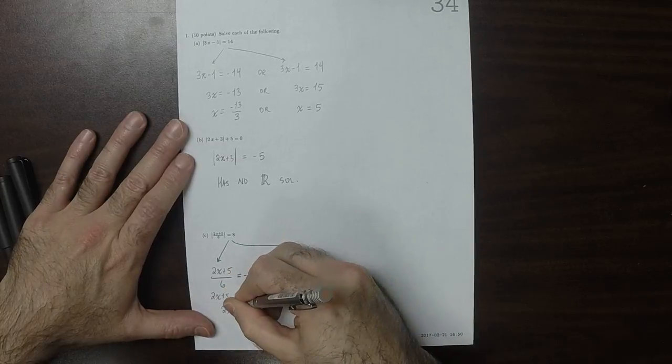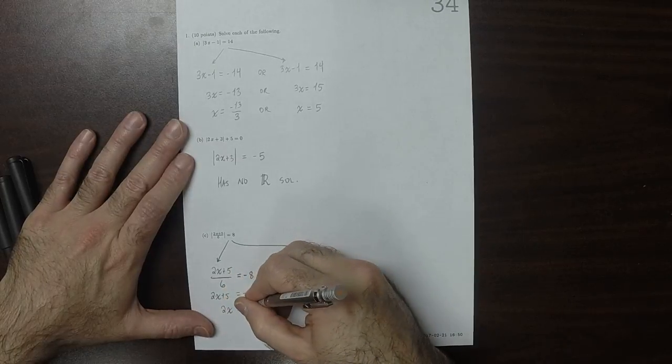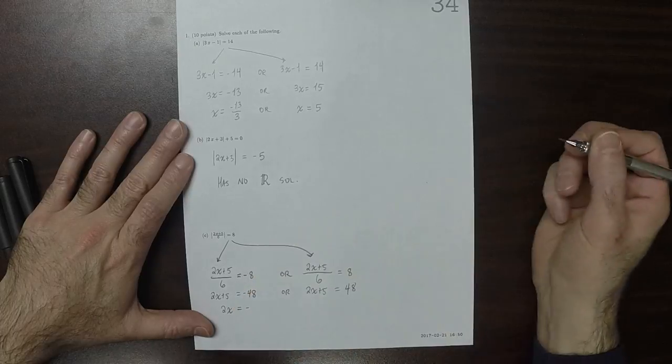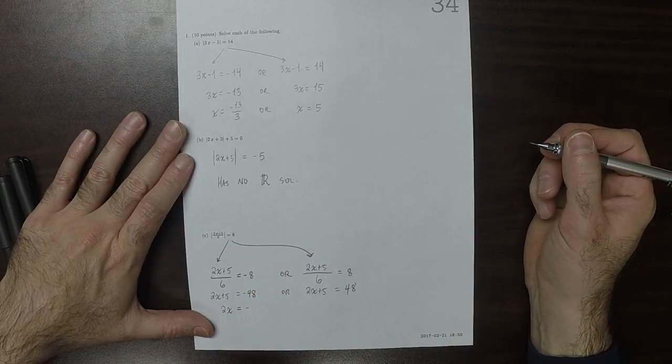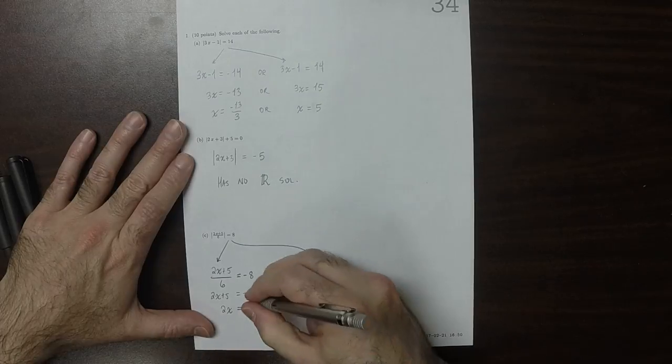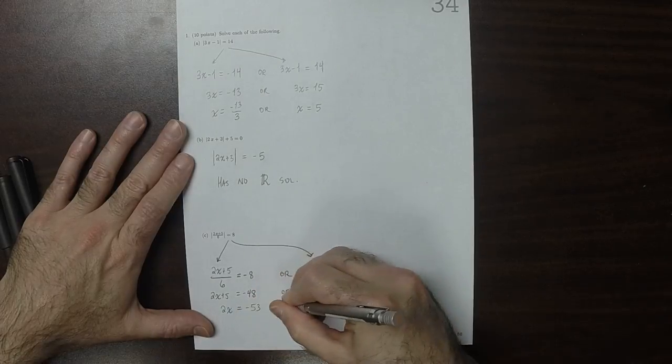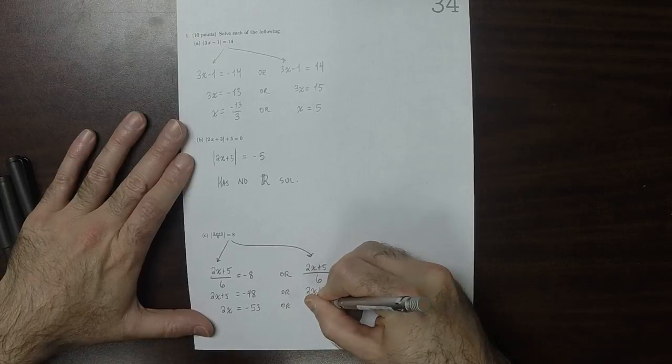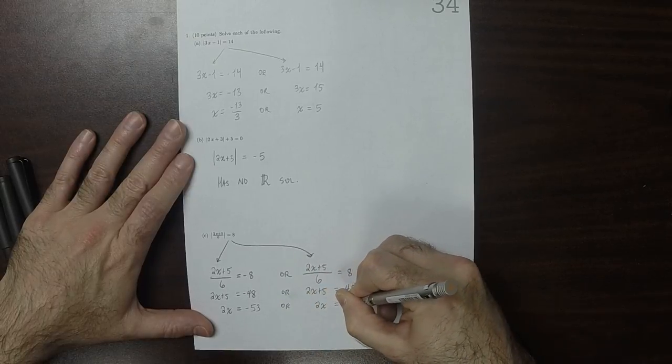So, 2x is, what, negative? So, if I subtract 5, negative 53, negative 43, or 2x is 43.